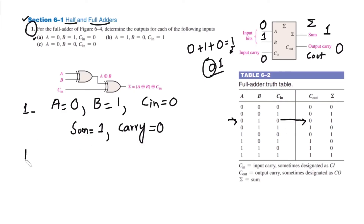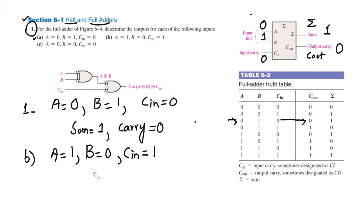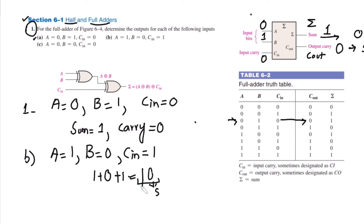For part B: A = 1, B = 0, and C in = 1. In this case, 1 + 0 + 1 = 2, which gives us 1, 0 in binary. So at the output, the sum is 0 and the carry out is 1. The combination 1, 0, 1 can also be seen in the truth table, giving output 1, 0.